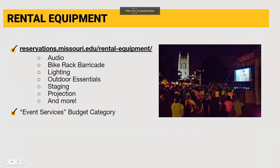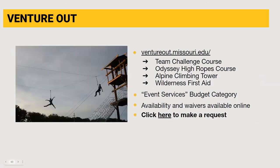If ORG doesn't have the equipment you're looking for, you can always reach out to the Office of Reservations and Events for those items, or consider applying for funding within ORG's event services category. Another great resource for RSOs looking to bond with their members and build leadership is Venture Out, Mizzou's high and low ropes courses where RSOs can do leadership retreats and outdoor activities. If you want to use these services, consider applying for Venture Out funding within ORG's event services category.